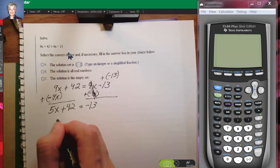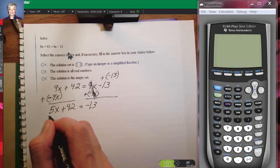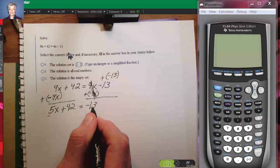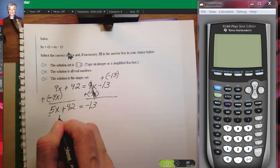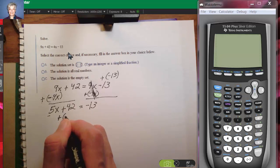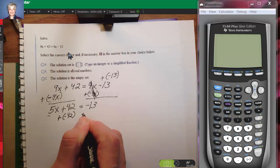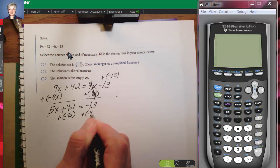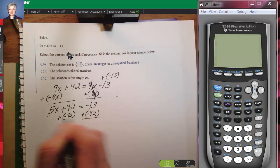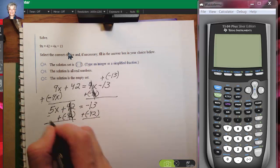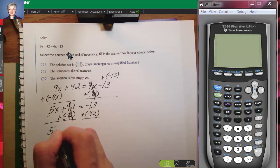Now, I've got one variable term. I need to get this constant term with this constant term. So I'm going to add the opposite of the constant term I'm trying to move to both sides of the equation. So the 42 plus negative 42 is 0, leaving me with 5x.